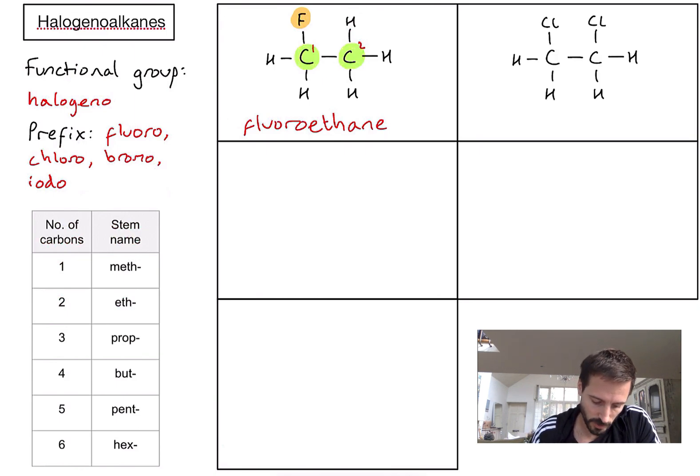Second example. We've got two chlorine atoms bonded to the molecule. Let's count the carbons again: one, two carbons. That's eth. So the stem part is eth and it's going to end just like the first example with -ane.